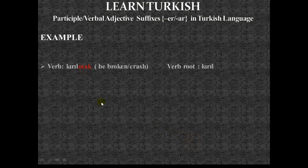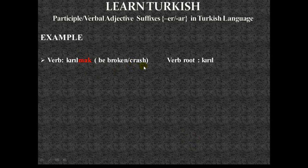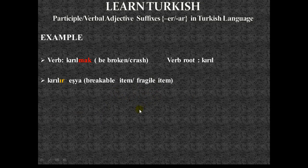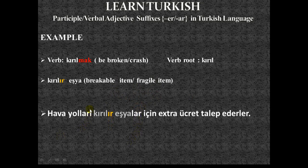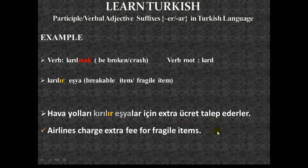The next verb is 'kırılmak,' meaning to be broken or crash. The verb root is 'kırıl.' The verbal adjective 'kırılır' combined with 'eşya' gives 'kırılır eşya' — breakable item or fragile item. Example: 'Hava yolları kırılır eşyalar için ekstra ücret talep ederler' — Airlines charge an extra fee for fragile items.